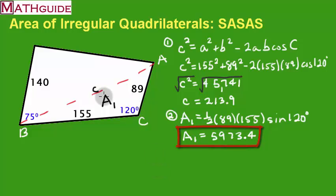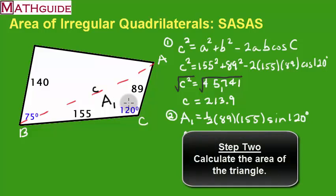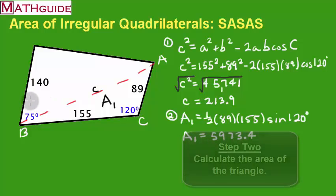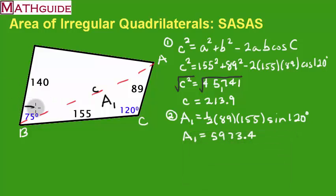Now I have to find the area of the second triangle. To find that area I'd like to use the same formula: take this side, this side, and the angle between them. Unfortunately, this 75-degree angle is not the angle between the two sides — the 75 is the entire angle. I don't want the entire angle; I only want the angle between the two sides. So I need to find the smaller angle right here, because once I have that angle I can get the adjacent angle, since together they add up to 75 degrees.